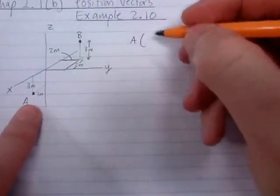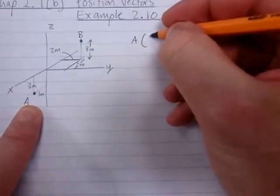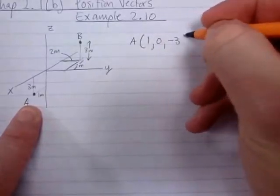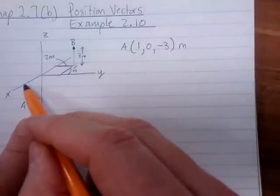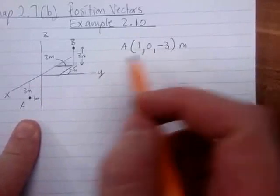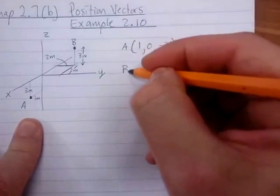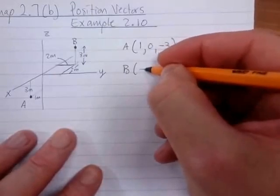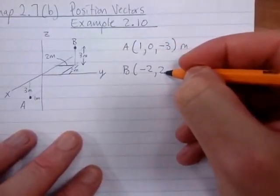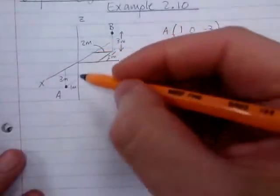So the coordinates of A are (1, 0, -3) meters — I move one in x, zero in y, and minus three in z. The coordinates of B are (-2, 2, 3) meters — minus two in x, two in y, and three in z.